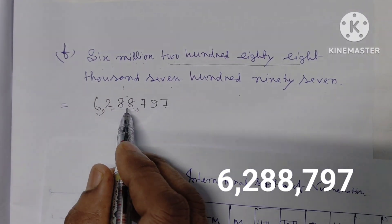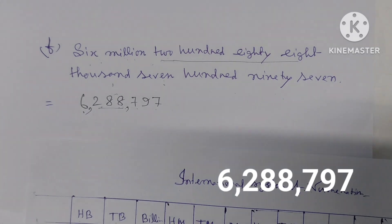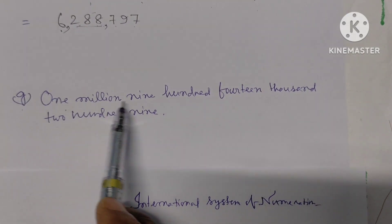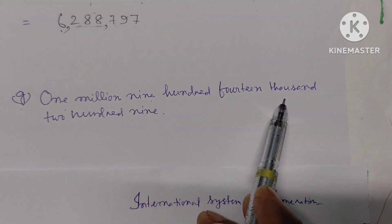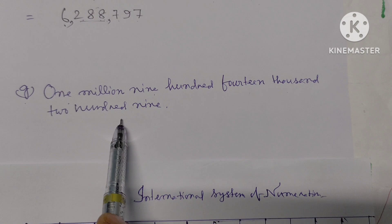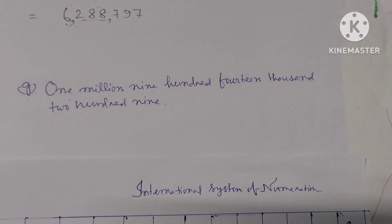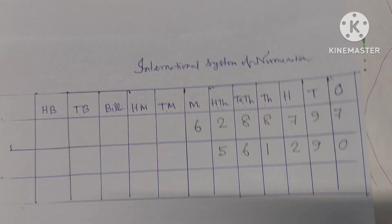Next one: one million nine hundred fourteen thousand two hundred nine. Let us write this in the chart. One million goes in the millions place.